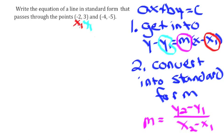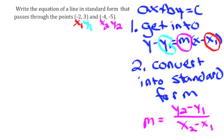We've got x1 and y1, so let's go ahead and label. I'm going to label x2 and y2 on the second point. The reason I'm labeling x2 and y2 is so that we can find the m. Again, we're going to get it into y minus y1 equals m times x minus x1 form, and we need to find the m in order to do that.